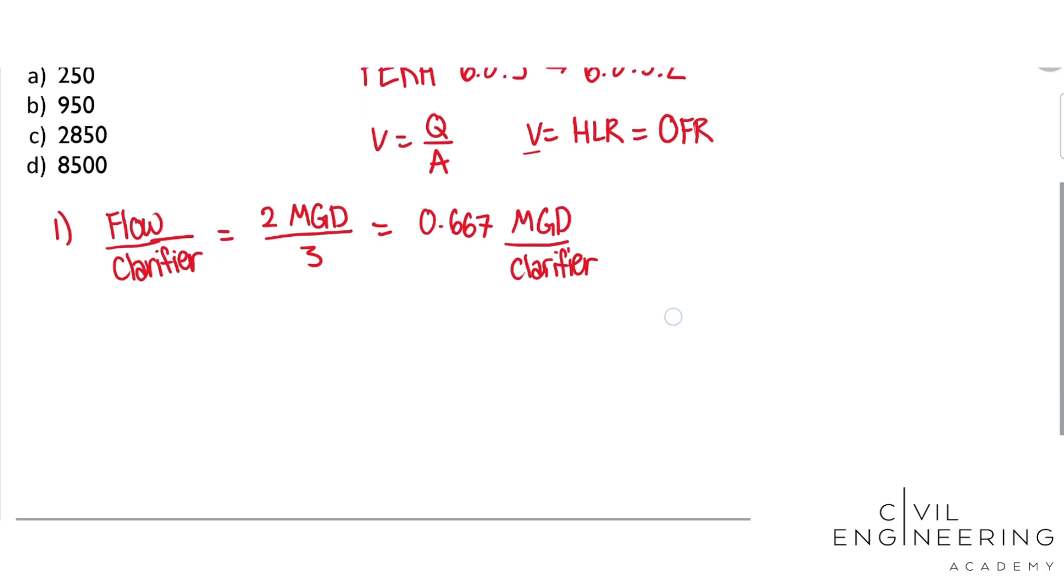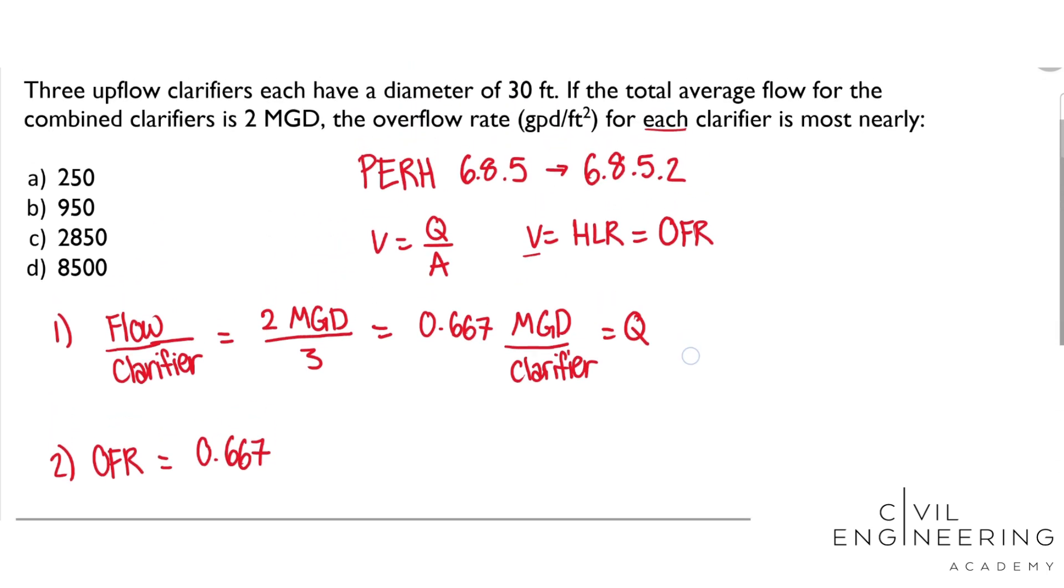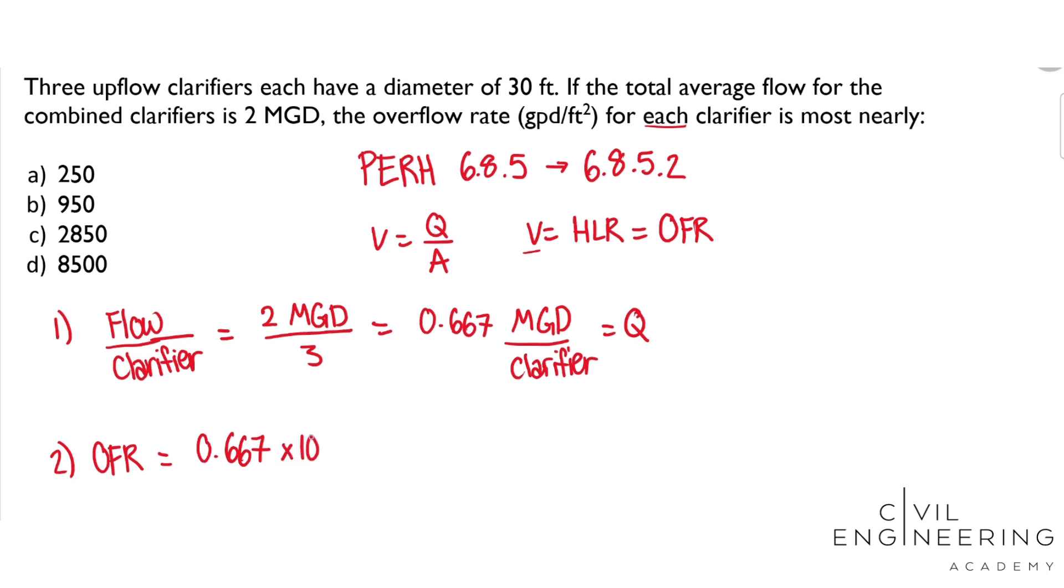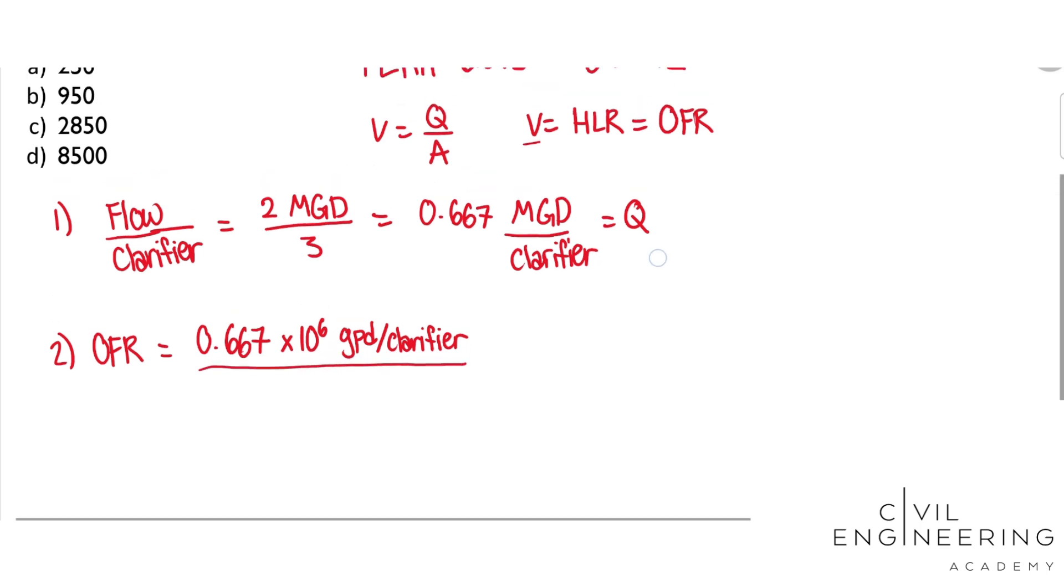Okay, simple enough, and then we will just use this as our Q and plug that right into our OFR equation. So we get OFR equals 0.667, and that's million gallons per day, but we were asked for gallons per day, so I'm just going to go times 10 to the 6 GPD per clarifier over our area.